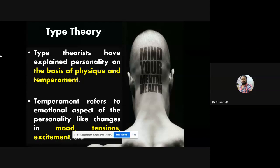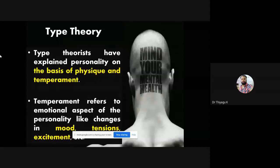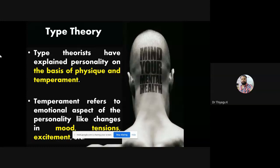Some of these theories are more than 100 years old — from the 18th century. I am first focusing on Sheldon's theory, which he provided to the world in the year 1940. But in the current situation, whether this theory makes sense is debatable, because now the way of food habits has totally changed, and the body type is not based only on genes but also on food habits and the environment. That is why we cannot come to any conclusions about the comparison of physique and temperament in the current scenario.